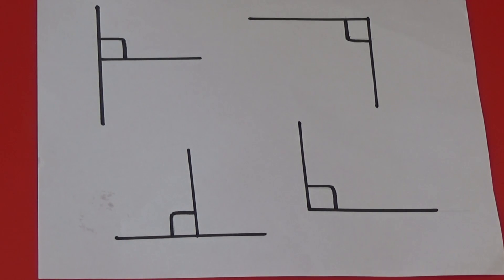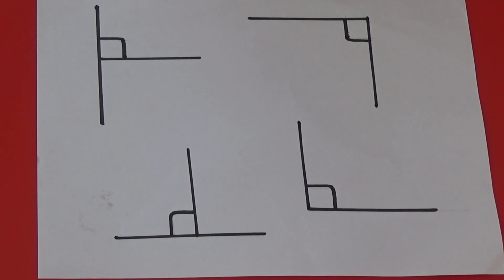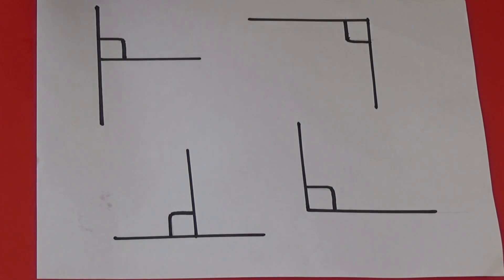These are all examples of perpendicular lines. The lines can join at the end of each line or in the middle. If you look around you, you can see lots of examples of perpendicular lines.